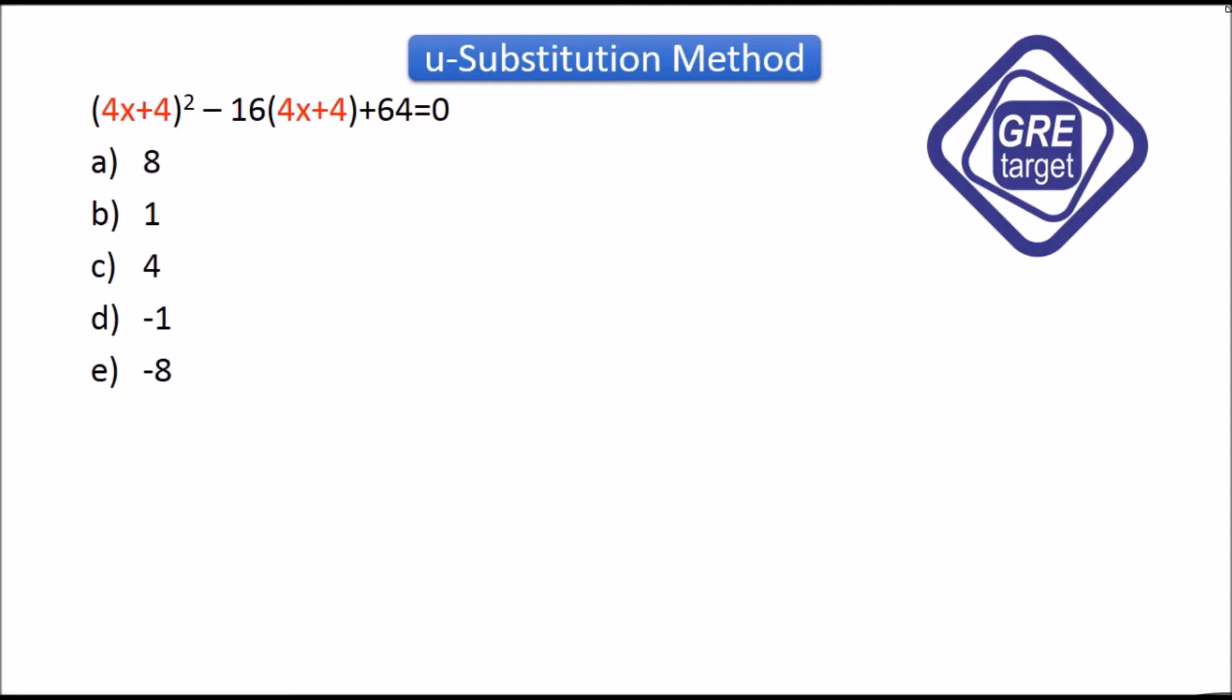Now let's start solving the equation. The first step is let u = 4x+4, so we have to replace in the equation. Therefore, u² - 16u + 64 = 0. Now we all know that (u-8)² = 0.